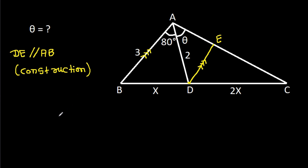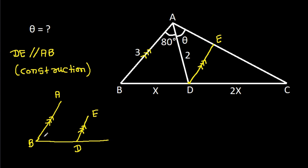Now, AB and DE are parallel. That means these two angles will be equal. So, if this angle is alpha, then this angle will also be alpha. And suppose this angle is beta.